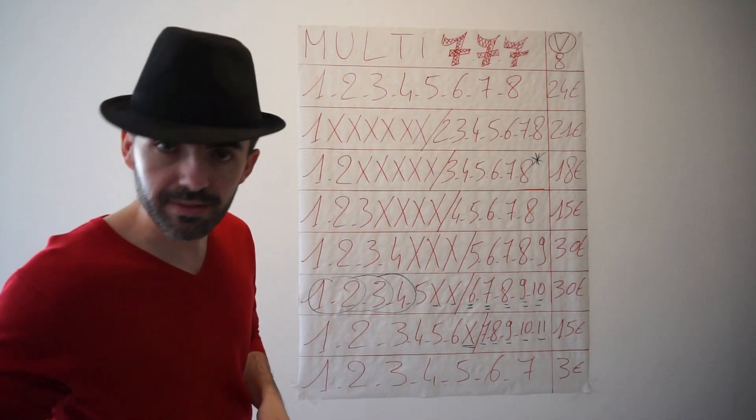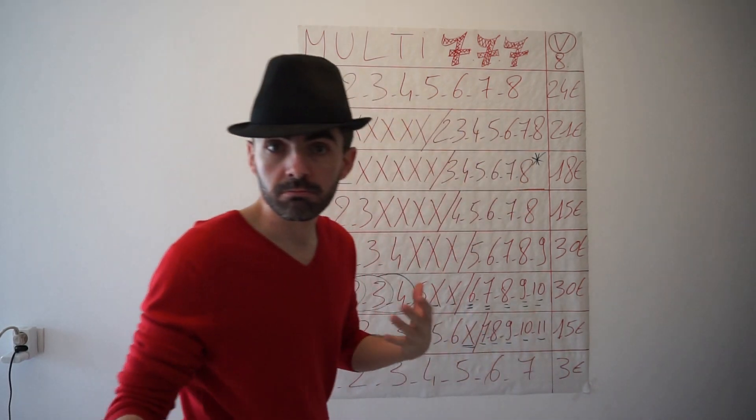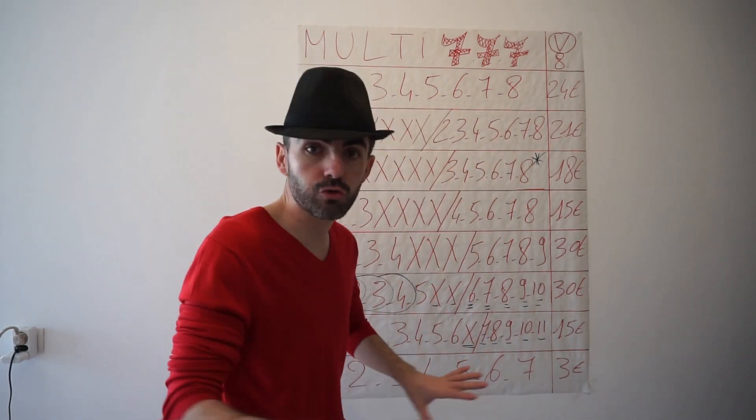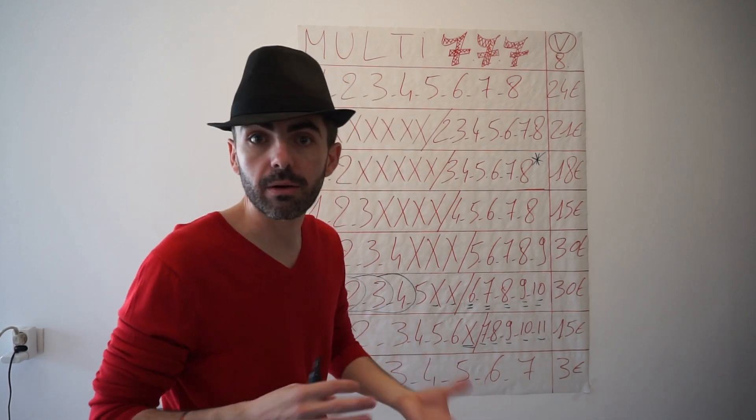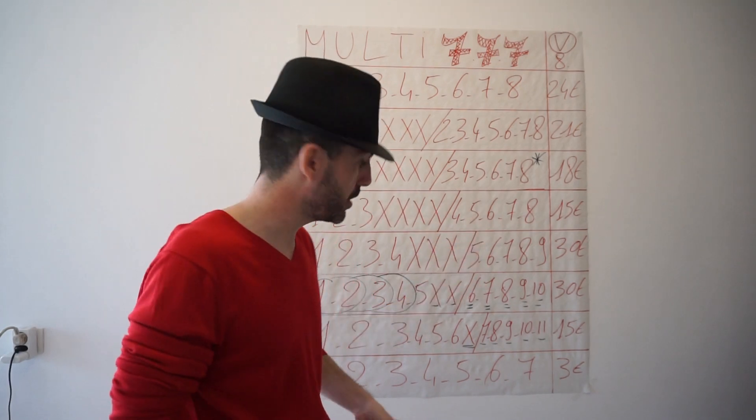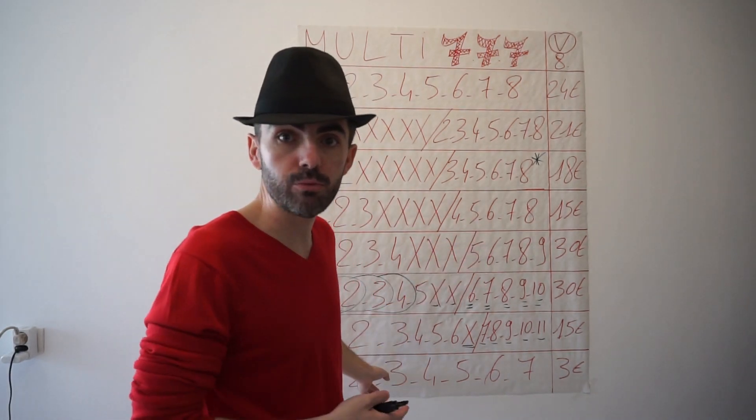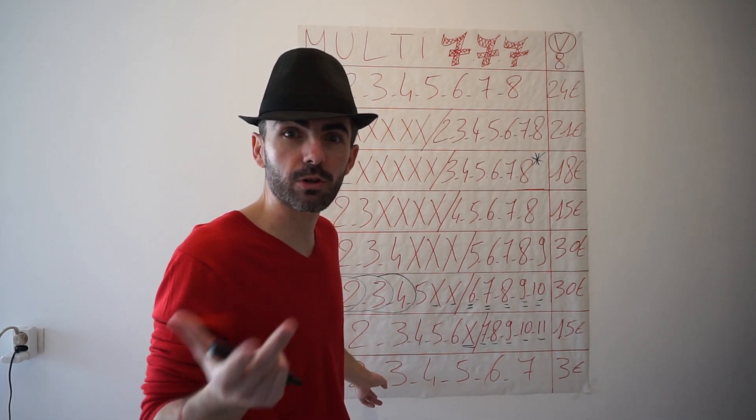Les amis, c'est parti. Premier jeu donc multi en 7 de 3 euros, très simple. 7 chevaux à plat, donc un jeu qu'on va retrouver ici en 8 chevaux que je fais assez souvent dans des catés, vraiment illisible pour essayer d'arracher un beau multi.